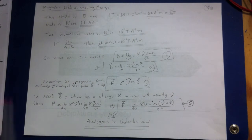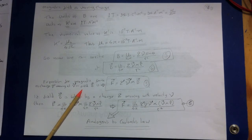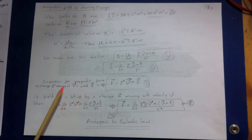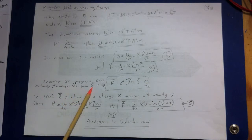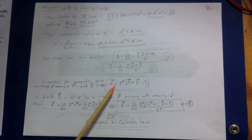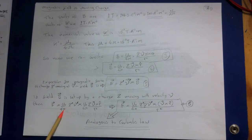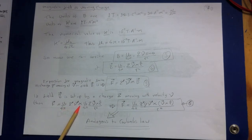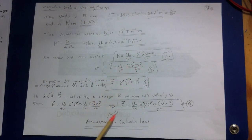We can now write the expression for the magnetic force between two point charges both in motion relative to an observer. A charge q-prime moving with velocity v-prime in a magnetic field B is given by the force equation. Substituting in gives F equals mu-nought over four pi times q times v crossed with B, yielding an equation completely analogous to Coulomb's law, where F is the force exerted on q-prime by q and r-hat points from q toward q-prime.